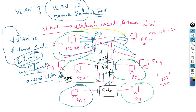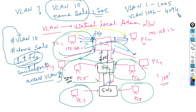There are two types of VLANs: standard VLAN with a range of 1 to 1005, and extended VLAN with a range of 1006 to 4094. If you create a VLAN using the standard range, it is a standard VLAN; using the extended range makes it an extended VLAN.